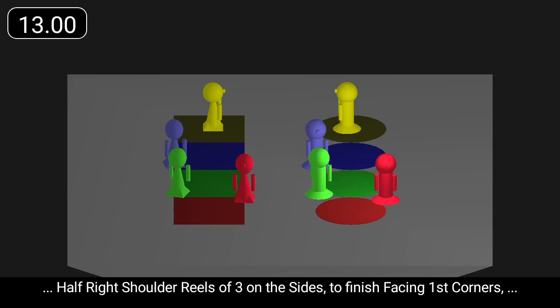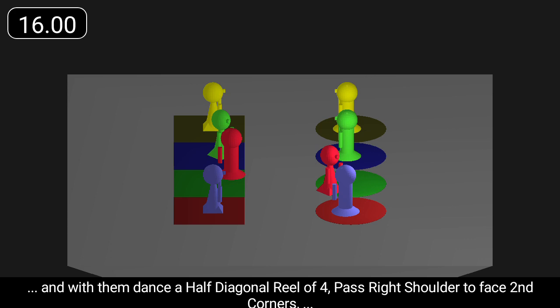Half right shoulder reels of three on the sides to finish facing first corners and with them dance a half diagonal reel of four past right shoulder.